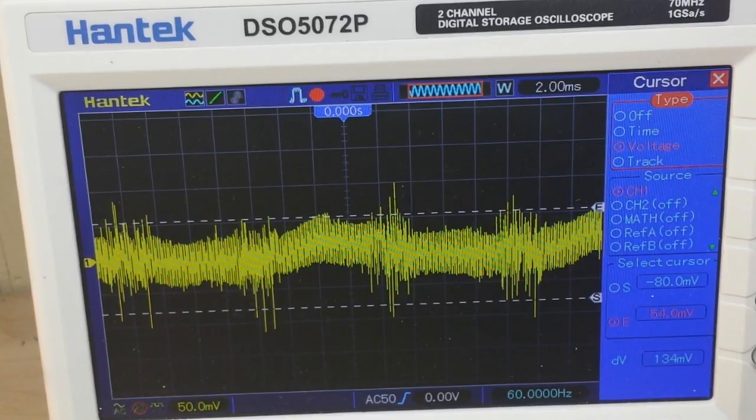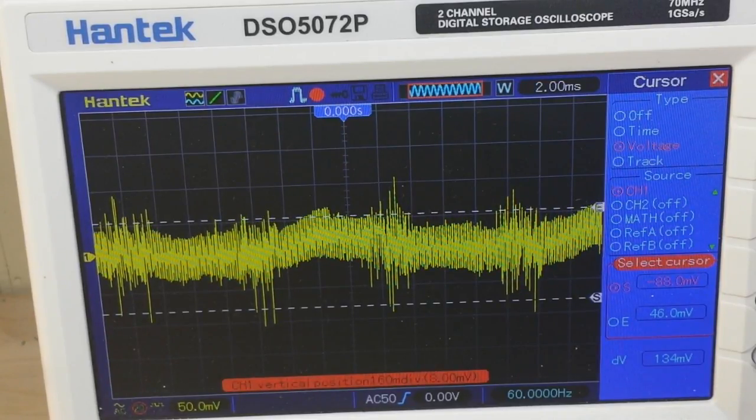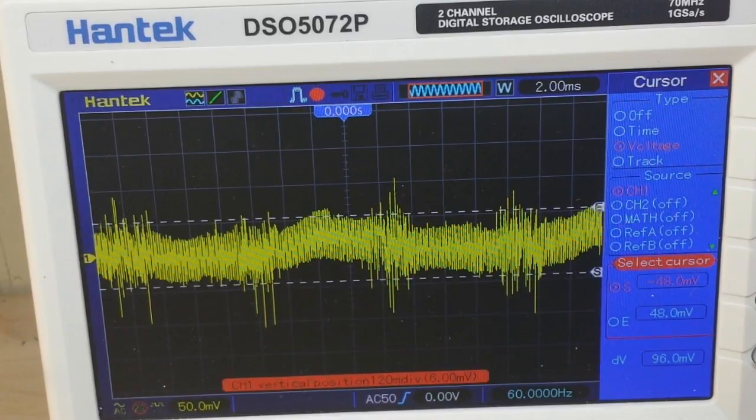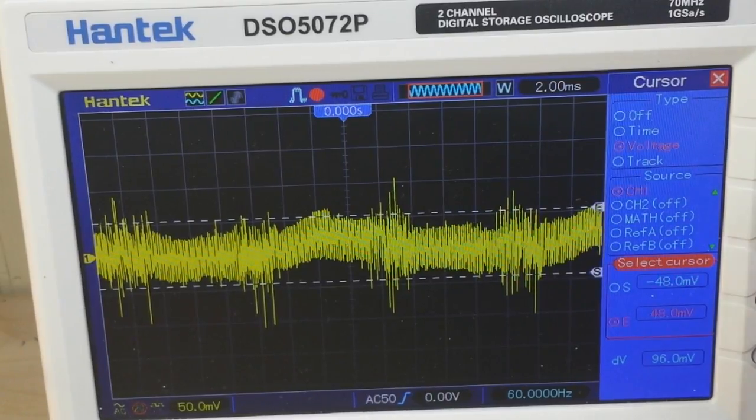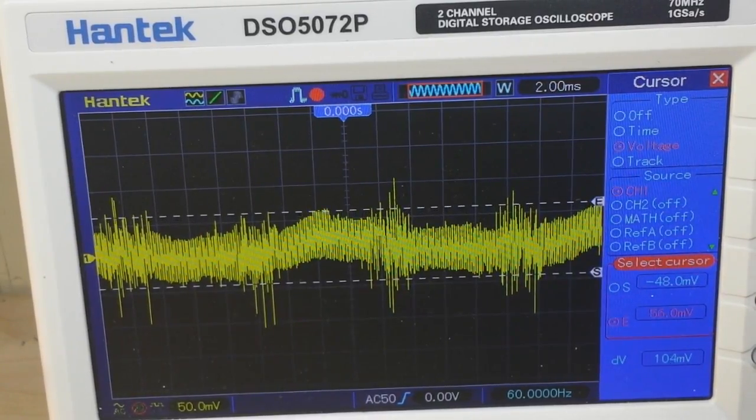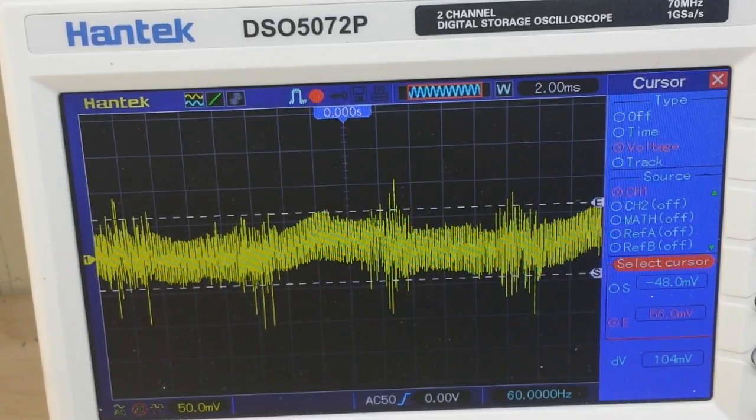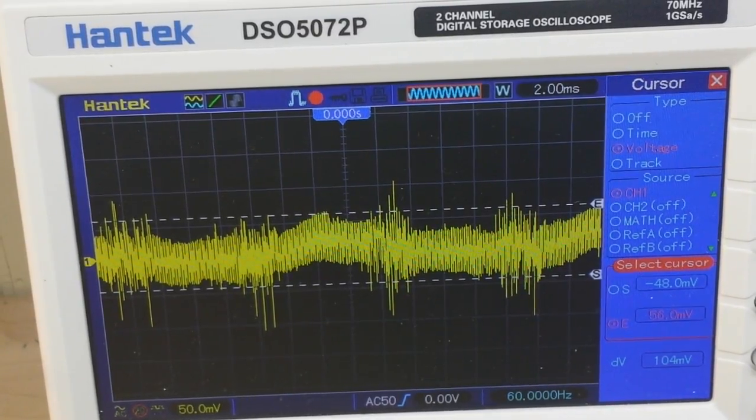And then I just need to adjust them. Okay, so there's our start cursor. So we're going to put our start cursor on the lowest point there and then we want the end cursor at the highest point there. And then we can read our noise on this signal, or our ripple on this signal, is 104 millivolts.